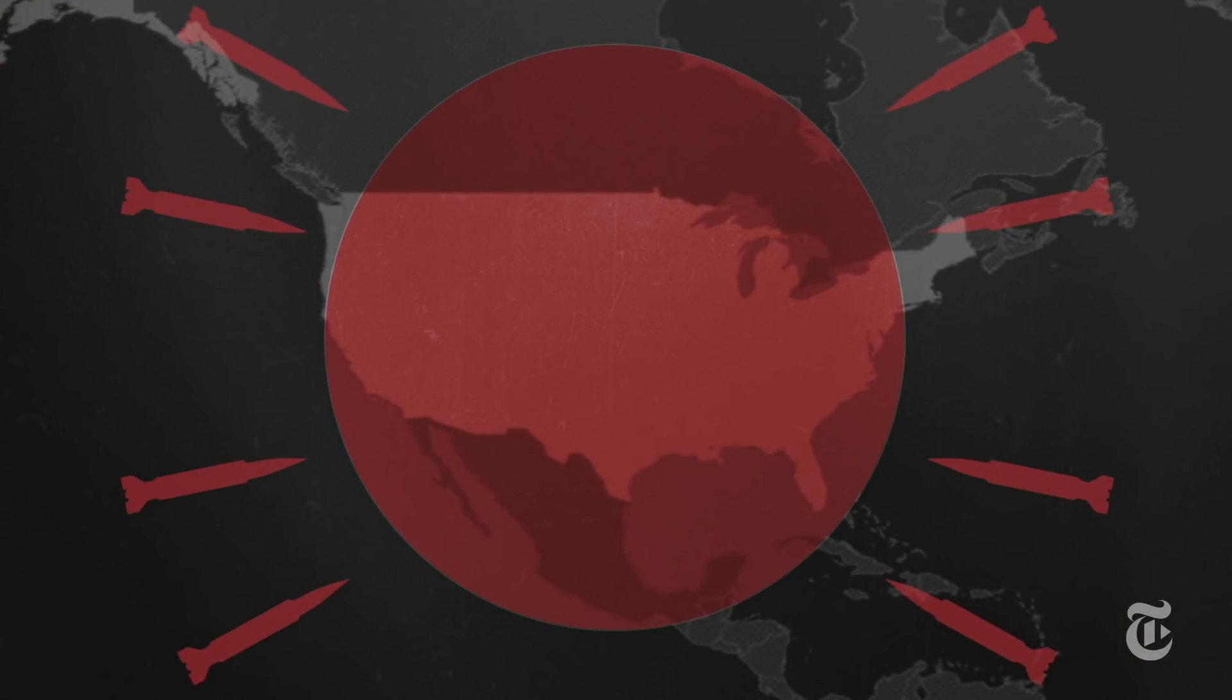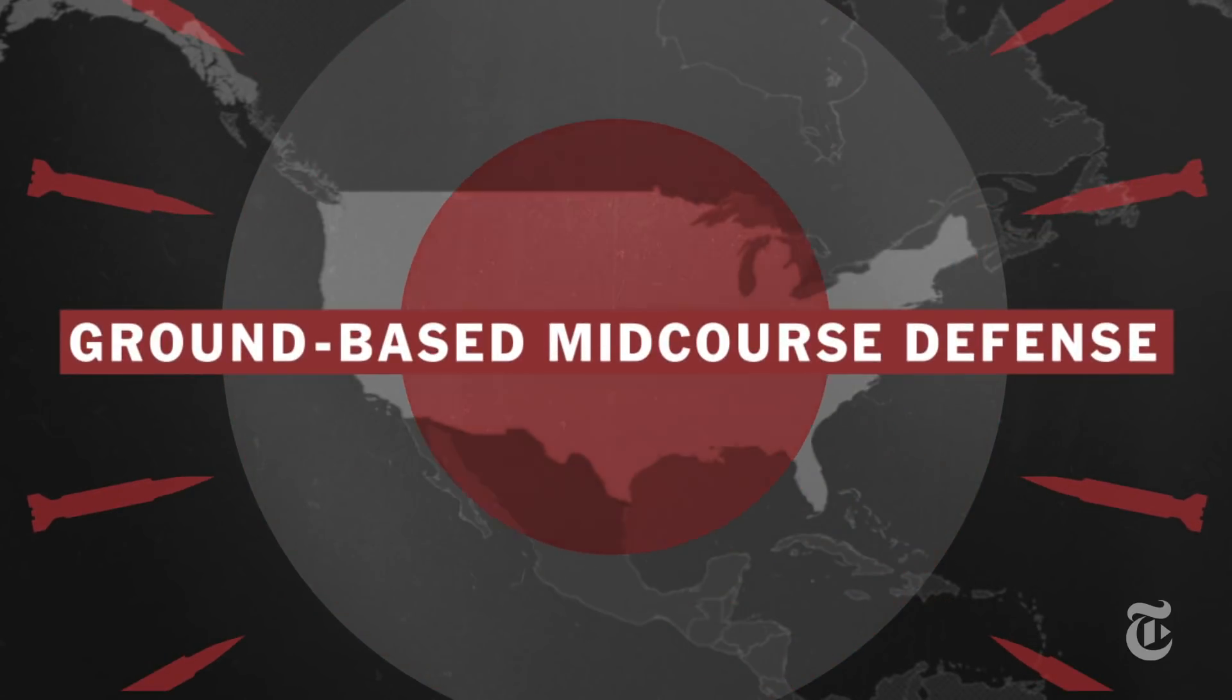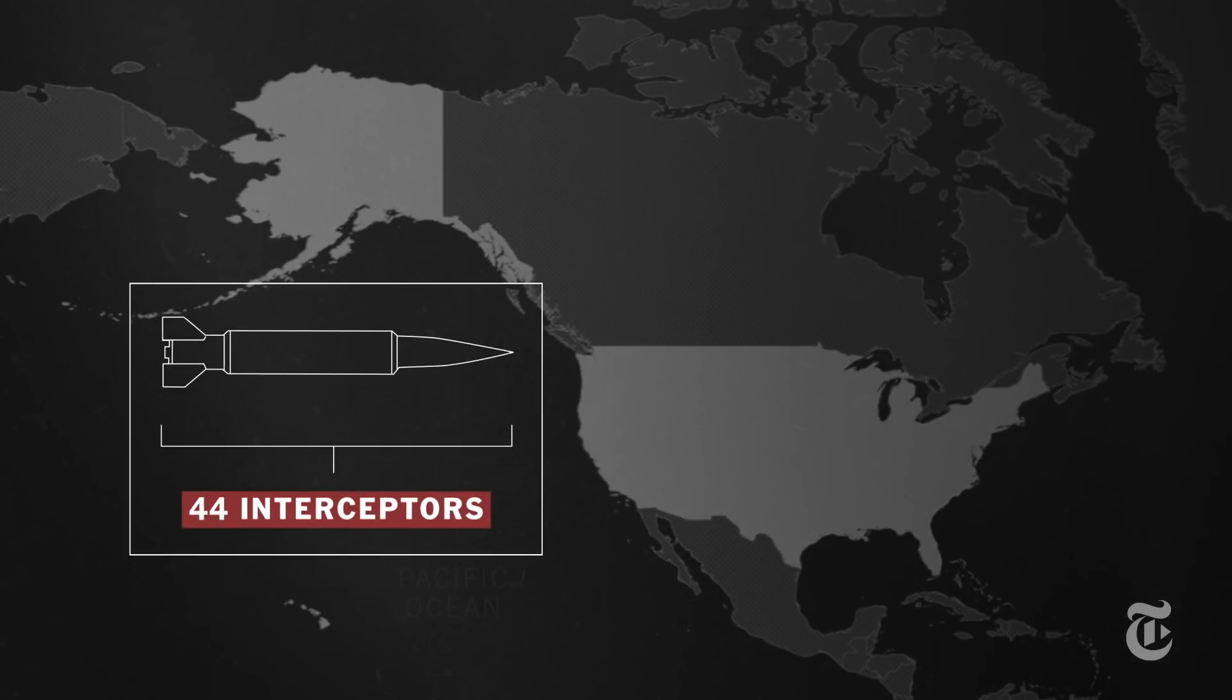The system protecting the continental U.S. is called Ground-Based Midcourse Defense. It has 44 interceptors in Alaska and California, and a track record that might keep you up at night.